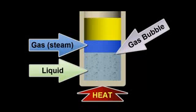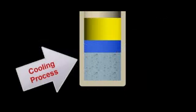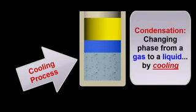In the next step of the animation, I'll turn off the heat to allow the water to cool. Notice that, as this happens, the gas bubbles will return to their liquid state. This process of changing phase from a gas to a liquid by cooling is known as condensation. Let's resume the animation and watch what happens.